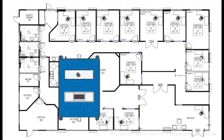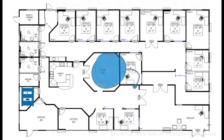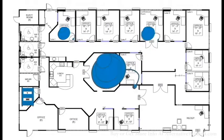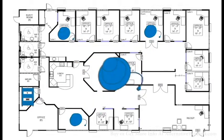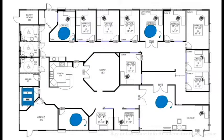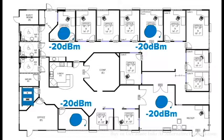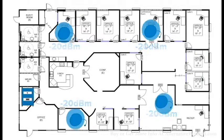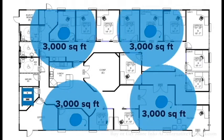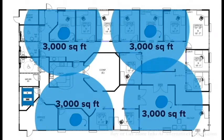dBm is also useful for estimating the indoor coverage area we might expect from an amplifier system. For example, an indoor antenna that is radiating negative 20 dBm can effectively cover about 3,000 square feet.